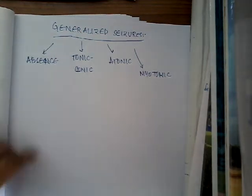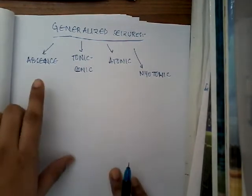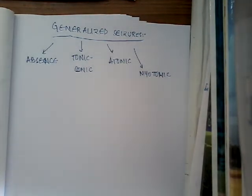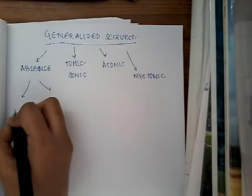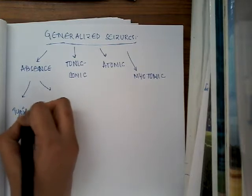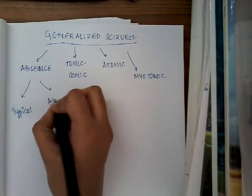So generalized seizures are generally divided into four types. Those include absence seizures, tonic-clonic seizures, atonic seizures and myotonic seizures. Absence seizures are again divided into two types. One is typical absence seizures and atypical absence seizures.